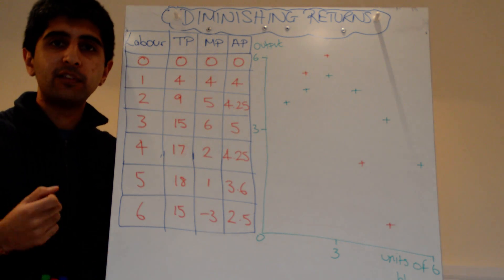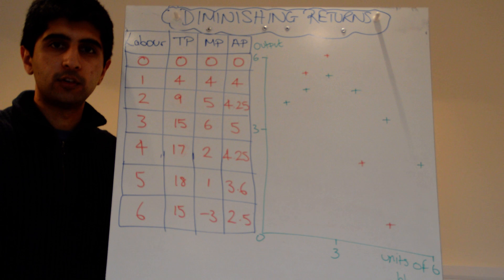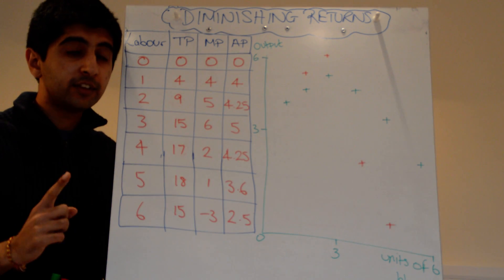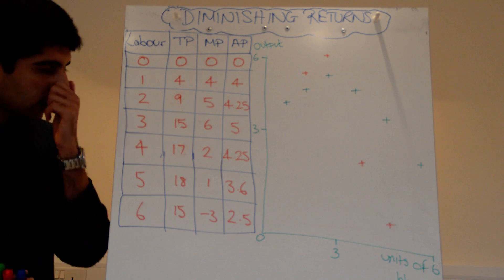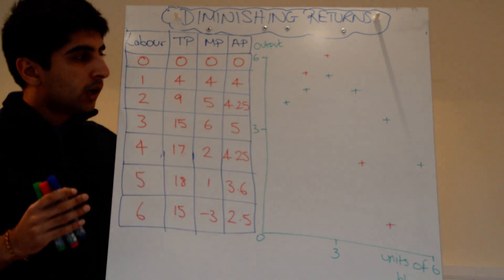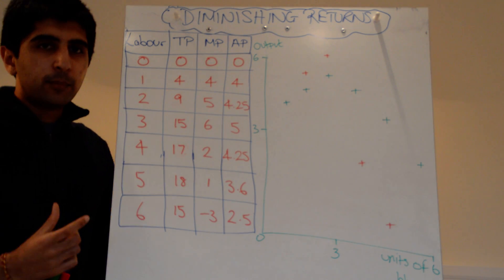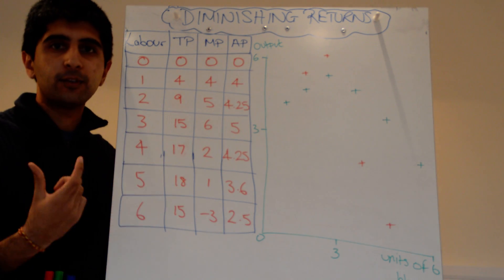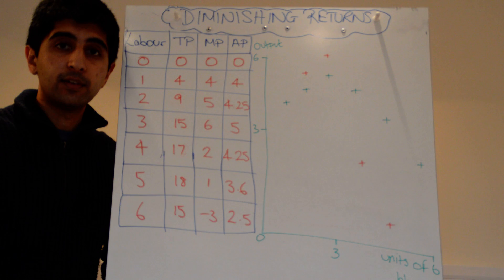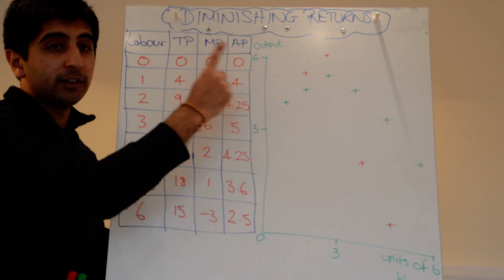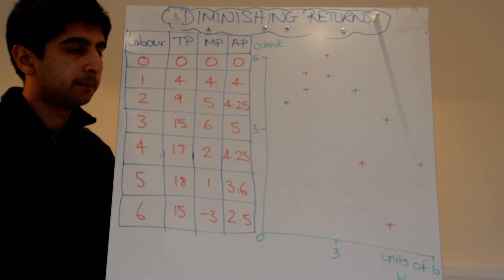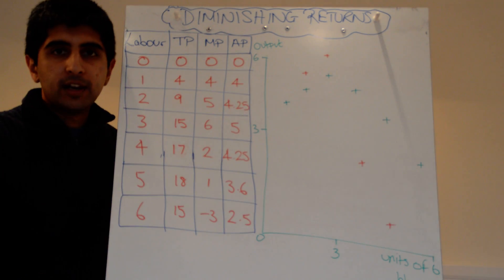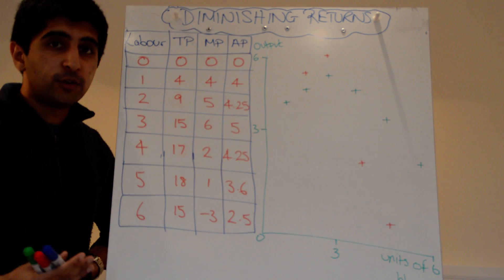Firms in the short run can vary their labour — they can hire more workers. A lot of the short run cost curves can be explained via the productivity of labour, and especially diminishing returns to productivity. To illustrate this, I want to use a numerical example I did with my students in class.